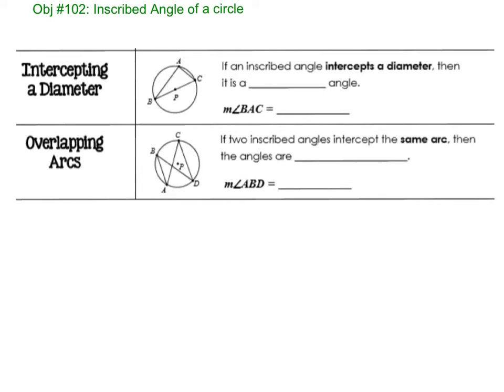An inscribed angle intercepts a diameter then it is a right angle. So what if we have a diameter here, what is this? That's 180. So what would be the angle A equal to? Well, half of 180 is 90. What do we call a 90 degree angle? It's a right angle.